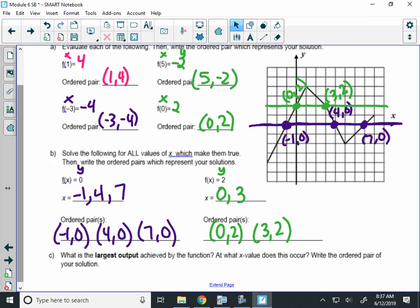Alright, finally. What's the largest output achieved by your function? Well, the largest output is the largest Y value. It's right here, that pink dot. That's at 1, 2, 3. The largest output is Y equals 4. What X value does that occur at? Well, it looks like it occurs at X equals 1. So, the ordered pair for that maximum value is 1, 4.